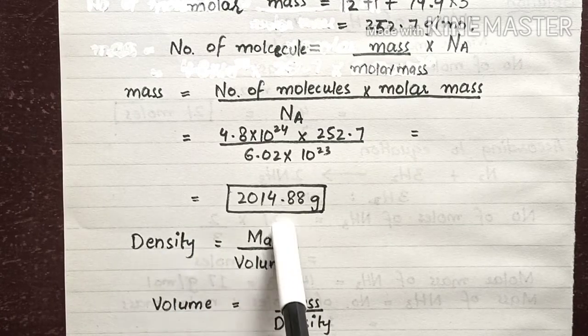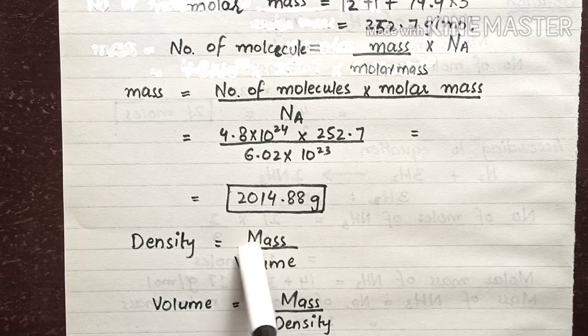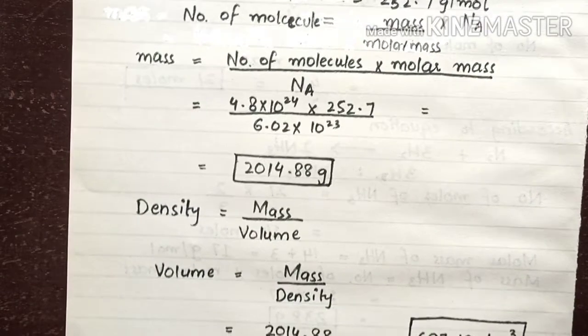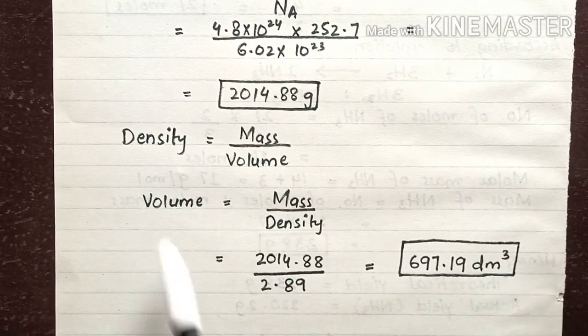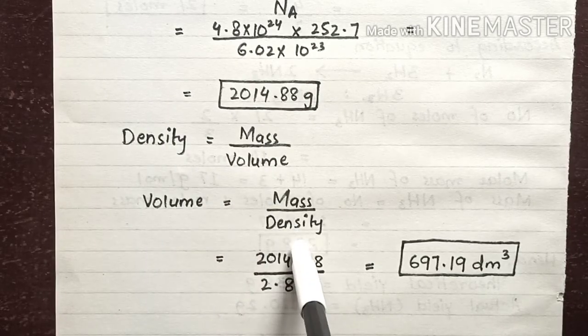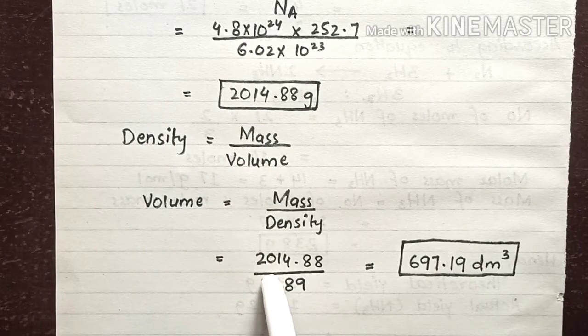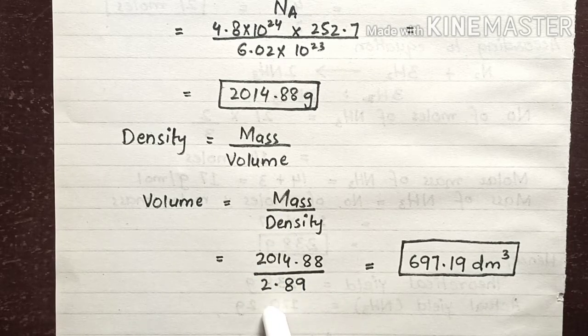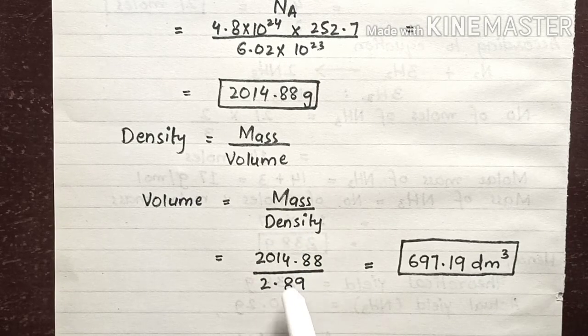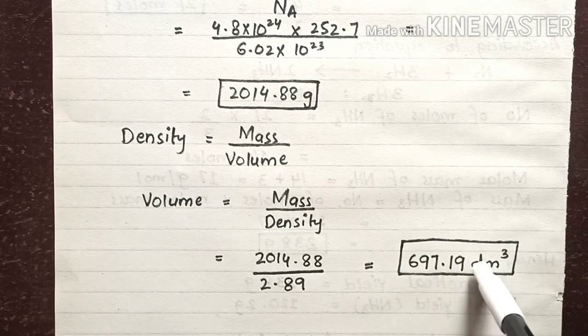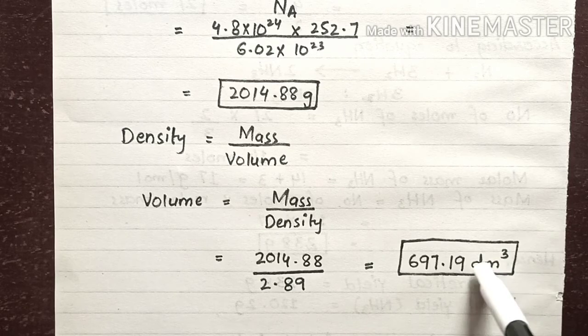We convert this formula to solve for volume: volume = mass / density. Mass is 2014.88 grams, density was given in the question as 2.89 grams per dm³. By calculating this value, the answer is 697.19 dm³. This is the volume of CHBr3.